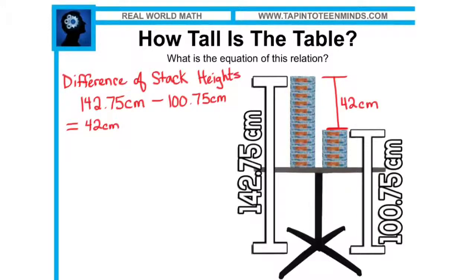Because they have the height between the top of the 12 stacks of paper, to the top of the five stacks of paper, students also noted that there were 12 minus five stacks, or seven stacks total, giving us the 42 centimeters.